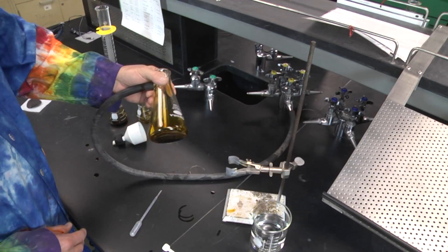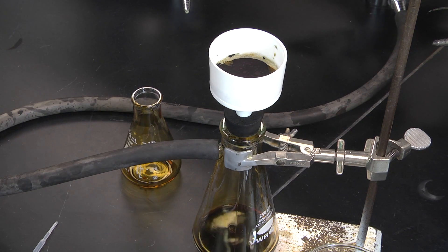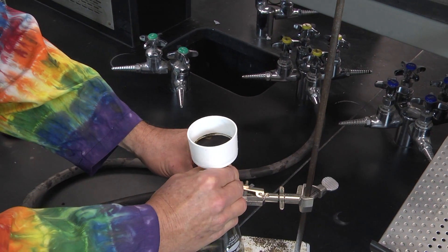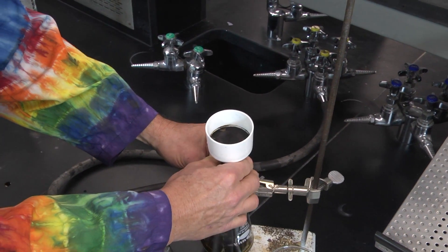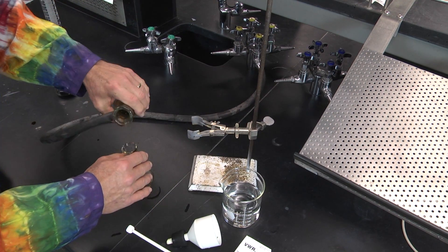You will notice that the filtrate is very dark. This is because not all of the indigo was retained on the filter paper. Some of the indigo slipped around the sides of the filter paper and some of the indigo particles were so small they passed right through the filter paper. You can increase your yield by refiltering the filtrate.